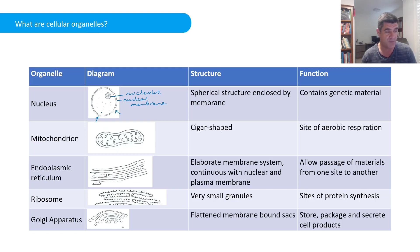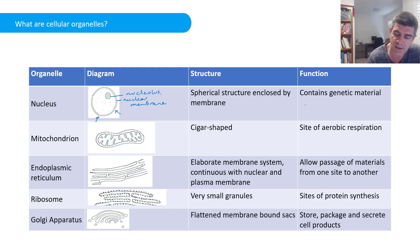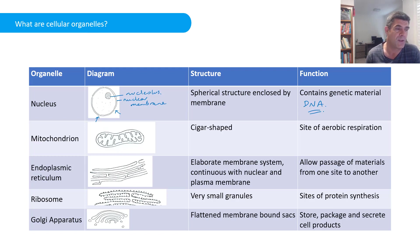The nucleus is a spherical shape, and most importantly it is the container of genetic material — chromosomes and the DNA that we find within the nucleus of eukaryotic cells.